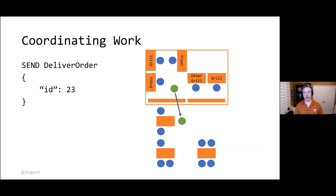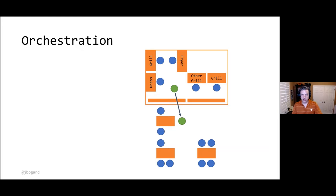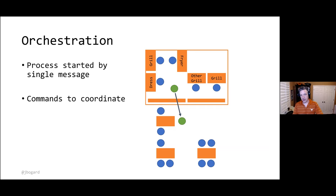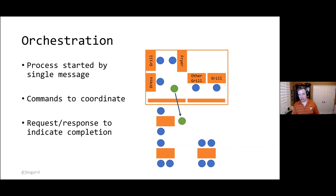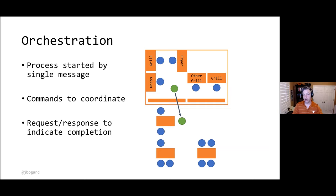This pattern is known as orchestration. In orchestration, the process is typically started by a single initial message — the first domino. From there, commands are used to coordinate activities, telling each step exactly what to do and when. Completion is indicated via request-response: when the chef tells the grill person to do work, that person replies back when done — not publishing a broadcast event, but responding directly to the person who gave them the command.